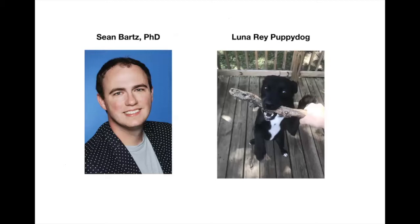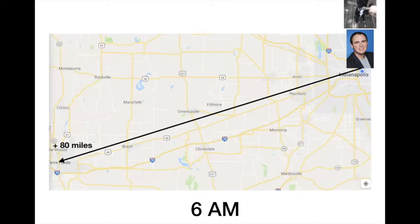We're going to look at two different individuals: me and my dog, Luna. We'll pretend this was made for when I commute to teach classes in person. At 6 AM, Luna and I are in the same position — my house on the near East side of Indianapolis. I'll call that my origin, position zero. I'll call the positive direction eastward toward Terre Haute, which is about 80 miles away.